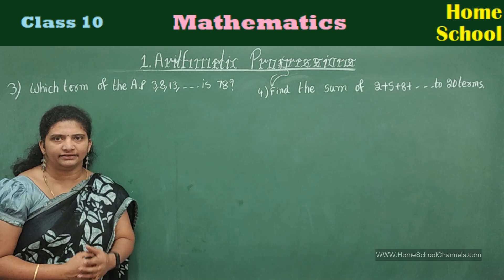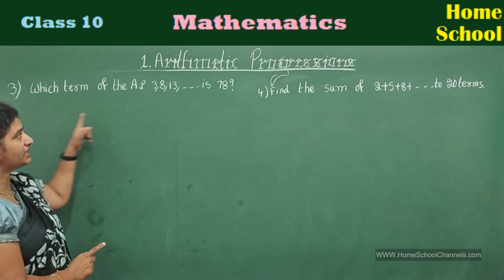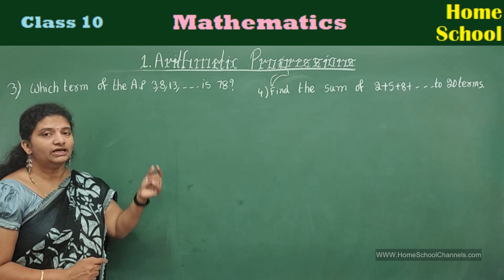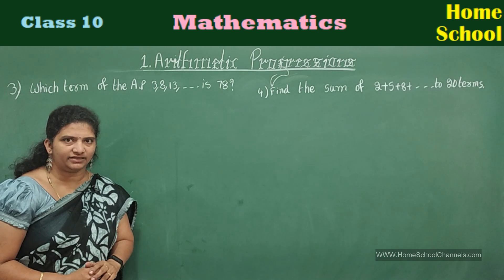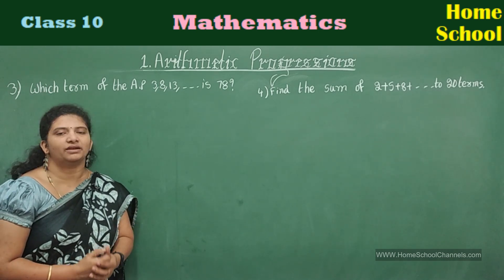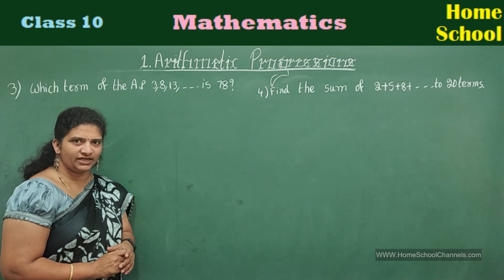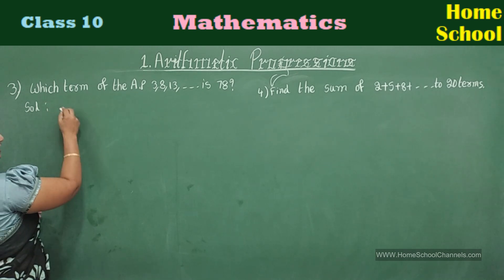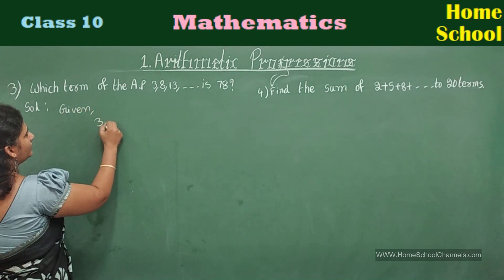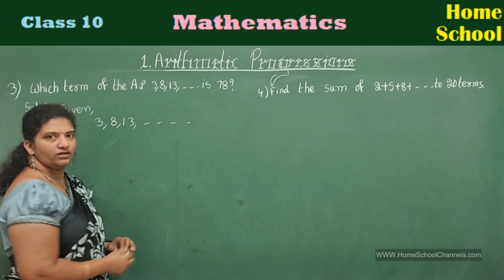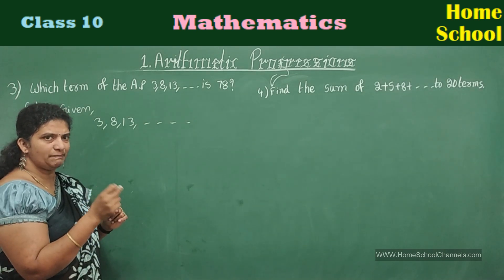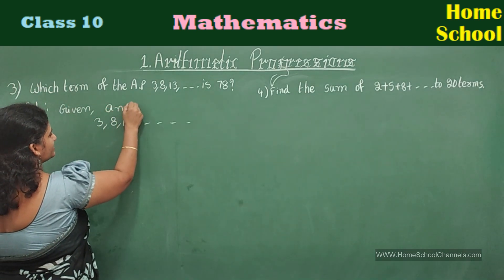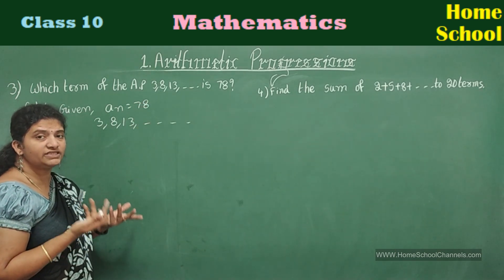Third problem: which term of the AP 3, 8, 13, and so on is 78? Read the question carefully. In the given arithmetic progression, somewhere you get the number 78 — at what position? That means you need to find n. Given AP: 3, 8, 13, and so on. And 78 is part of this progression, so I'll take aₙ = 78. We don't know which term is 78.